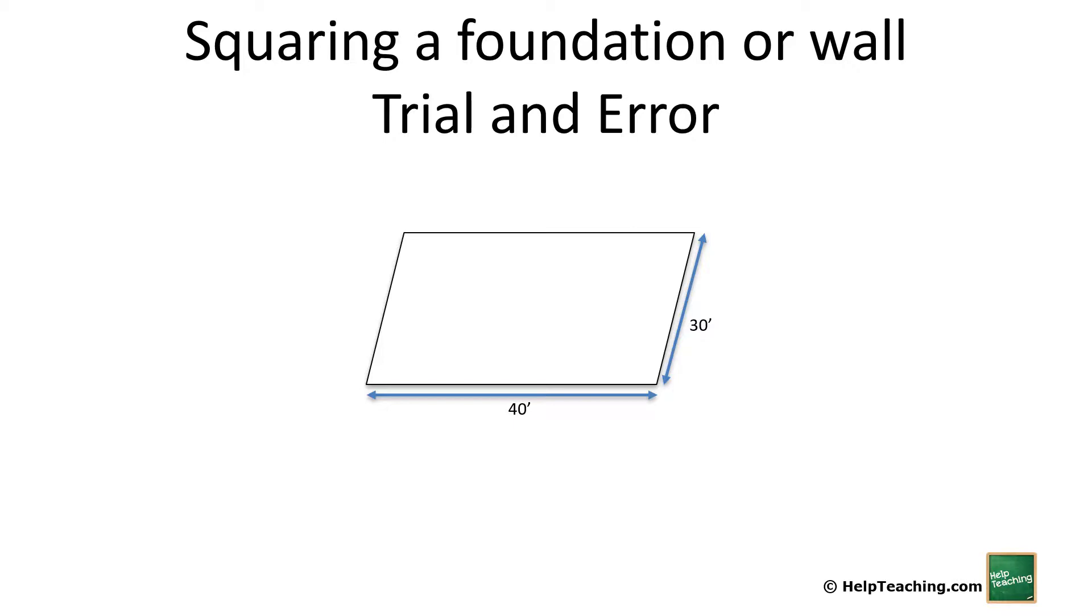So how I can do this is in a rectangle, all of our angles are equal. And if all of our angles are equal, then our diagonals will be equal as well. So I begin by measuring my diagonals, and I find they're not equal. One is 48, one is 52.